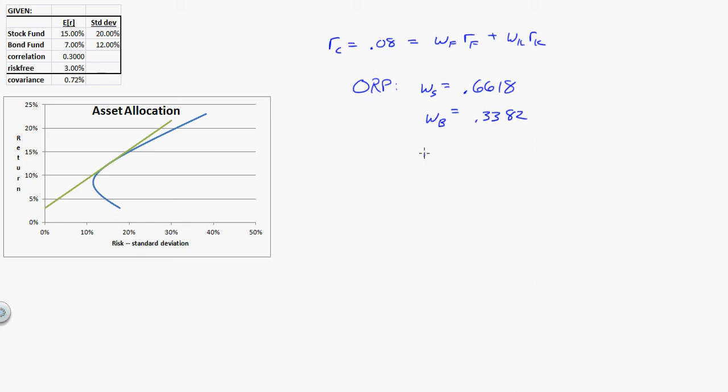So, what we then do to find the return on the optimal risky portfolio, it's 0.6618 times 0.15 plus 0.3382 times 0.07. That number goes into here. And so, now we have to solve. We can say 0.08 is equal to, instead of having WF, I have 1 minus WK times the risk-free rate of 3% times 0.03 plus whatever this RK is, times the weight in K.